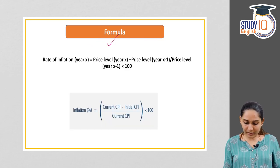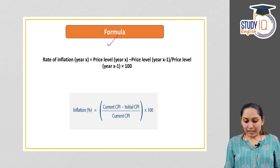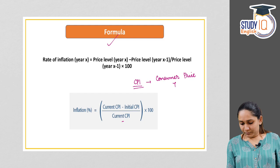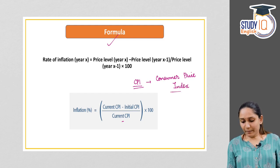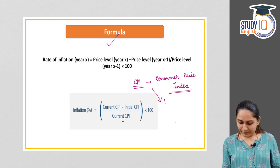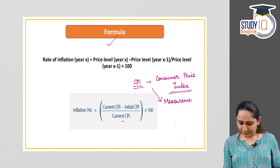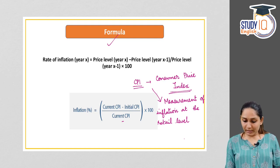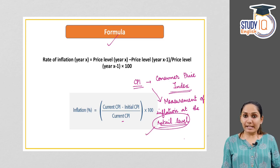The formula for inflation is: percentage = (current CPI minus initial CPI) divided by current CPI, multiplied by 100. CPI stands for Consumer Price Index, which is the measurement of inflation at the retail level.